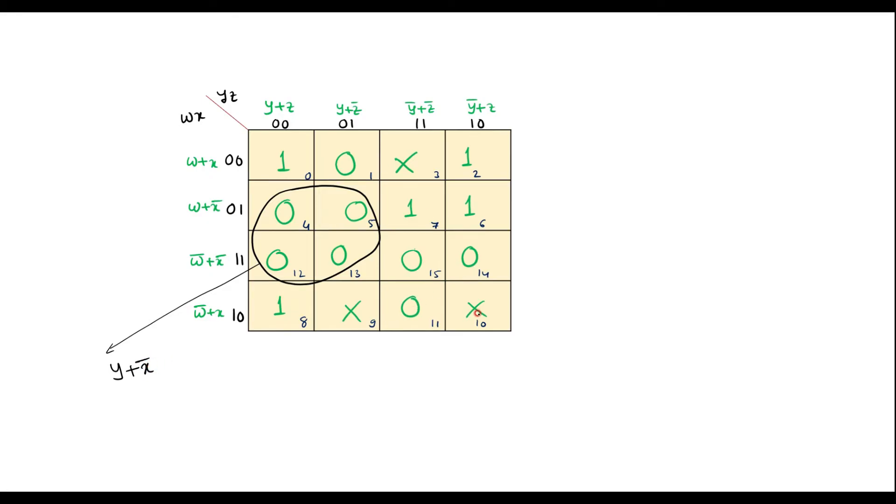So now this 0, 0, 0 and x can make one quad. So these four, I can make one quad. So here, its value is, it covers these two columns. Common factor is y bar. And here, the common factor is w bar. That is w bar, y bar.